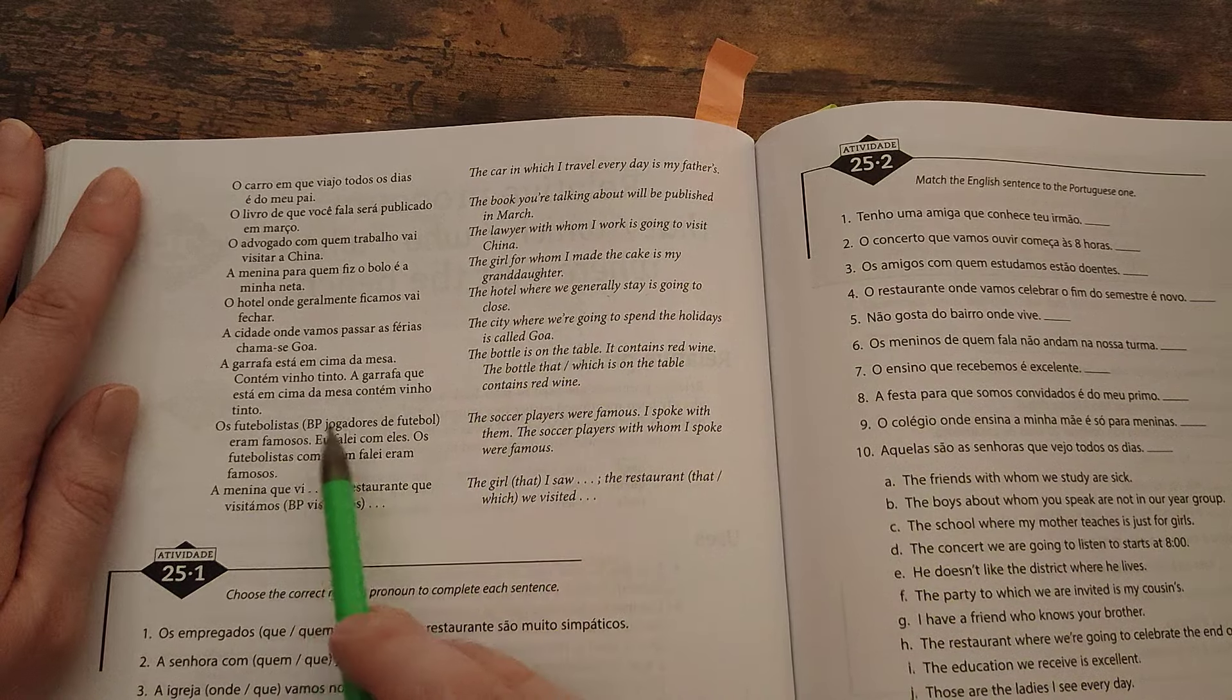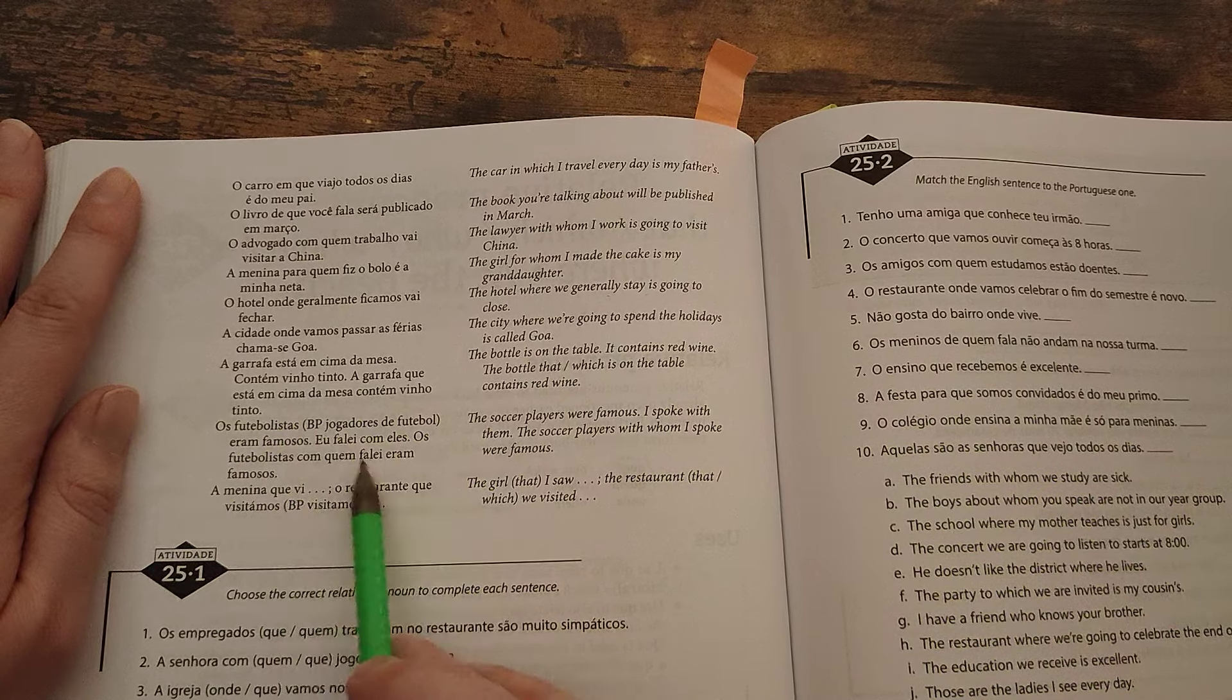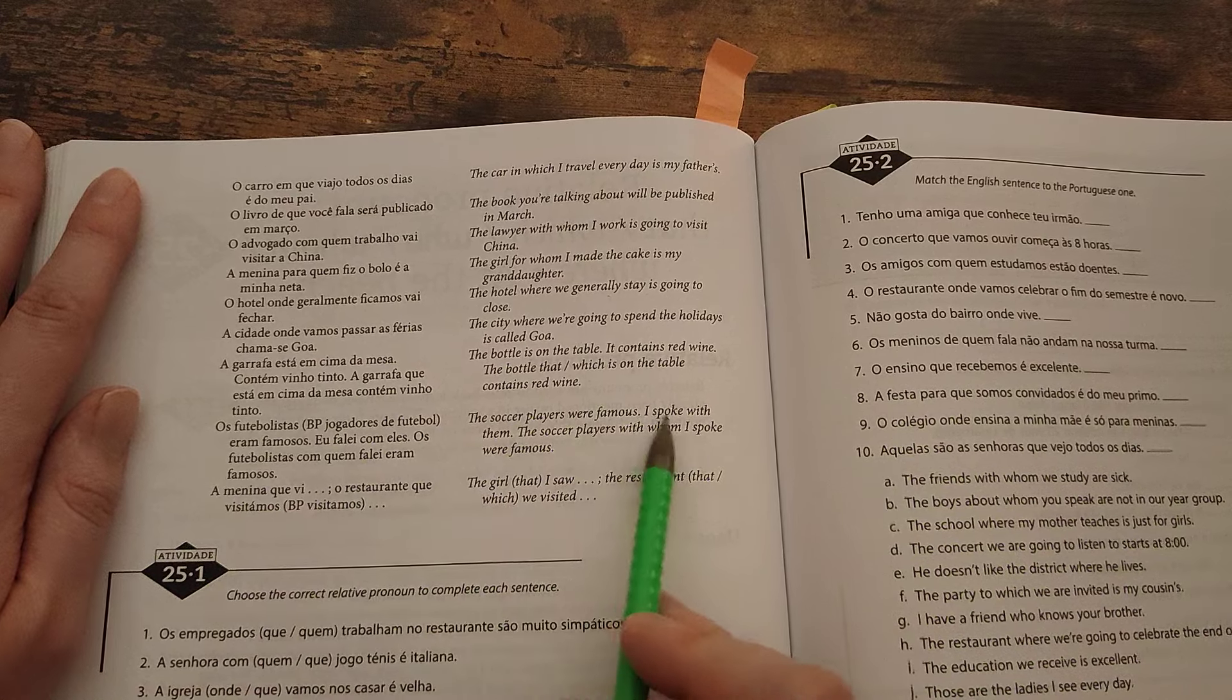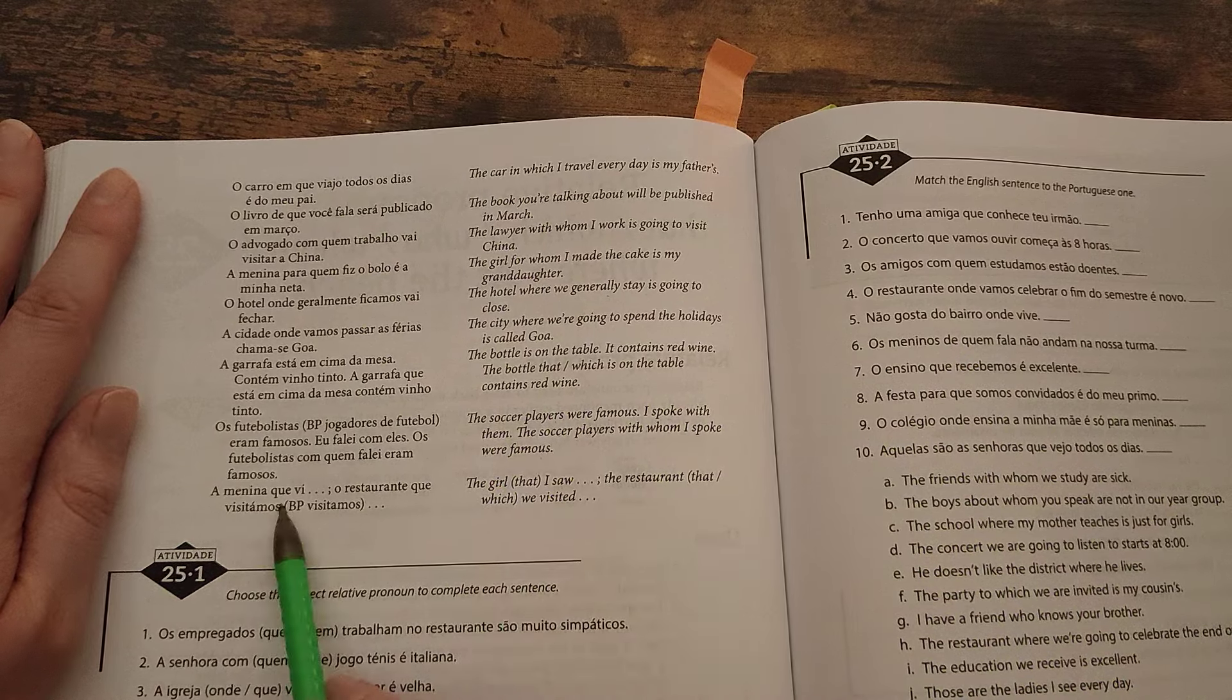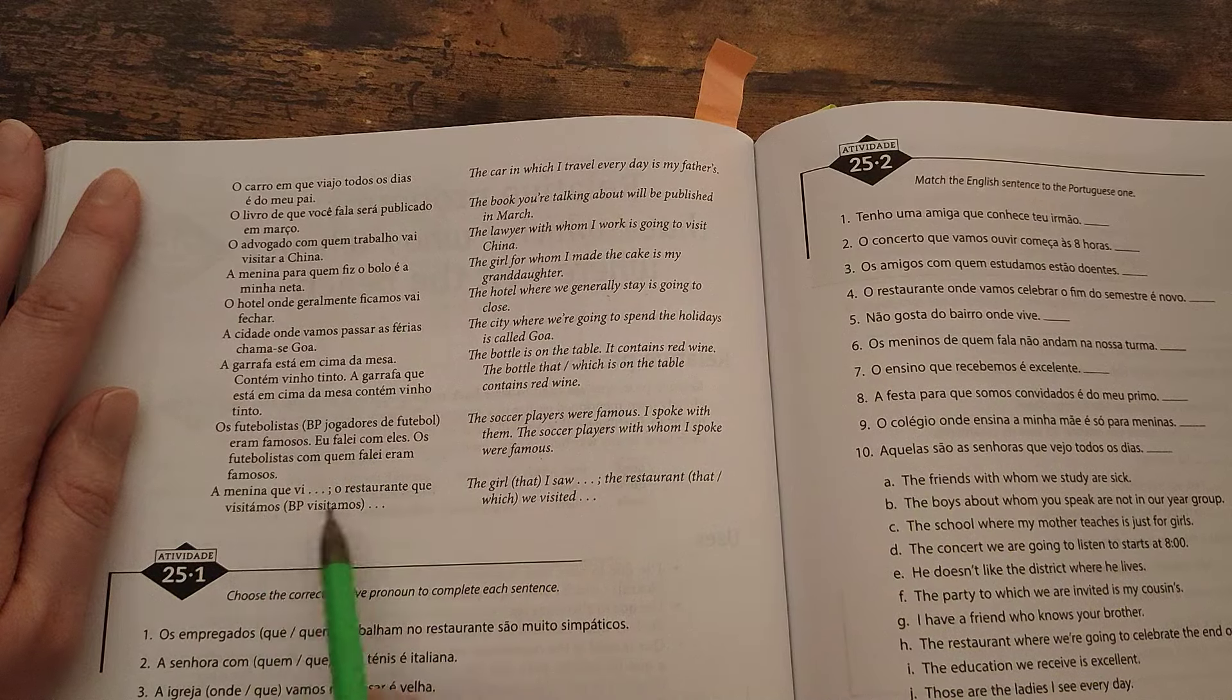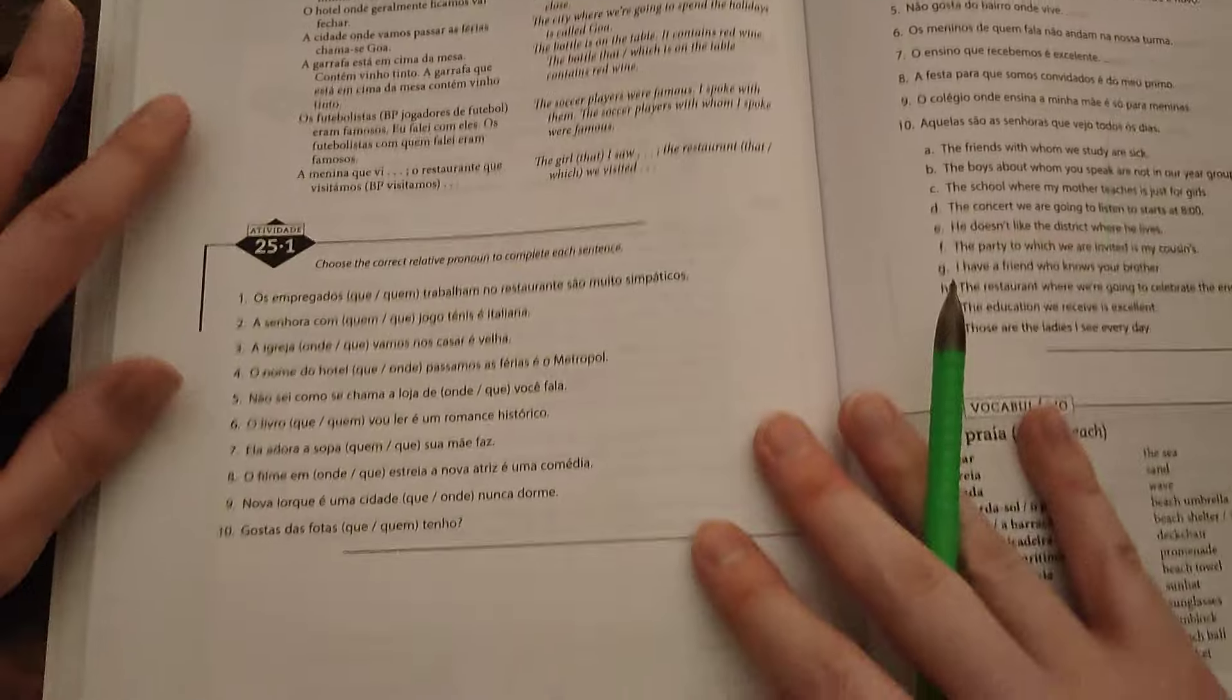Os futebolistas, os jogadores de futebol, eram famosos. Eu falei com eles. Os futebolistas com quem falei eram famosos. The football players were famous. I spoke with them. The soccer players with whom I spoke were famous. A menina que vi. O restaurante que visitamos. The girl that I saw. The restaurant which we visited.